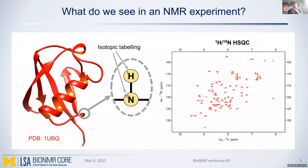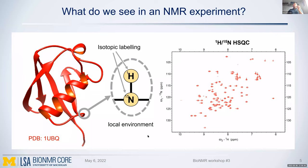The HSQC gives information on the local environment of each hydrogen and nitrogen atom. If every nitrogen and hydrogen were in the same chemical environment, you'd only see one set of peaks. But every amino acid is slightly different - some are in alpha helix, some in flexible loops, some in beta sheet - so they experience different local environments, giving very good dispersion.